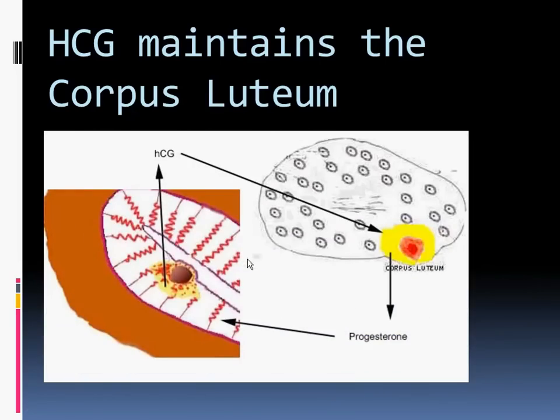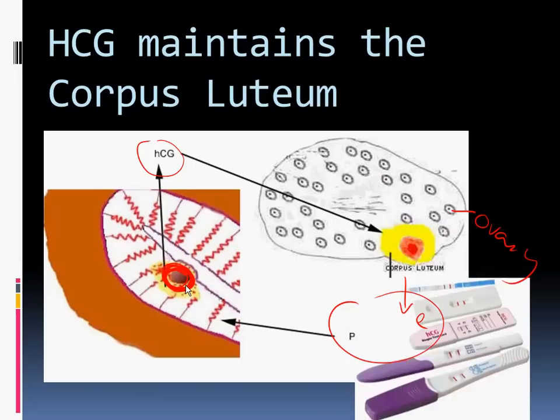So HCG is going to be what is released as soon as implantation occurs successfully. So if this was the blastula, the ball of cells that migrated and now implanted, HCG is going to act upon the corpus luteum, the structure within the ovary, and this will cause the release of estrogen and progesterone to continue, which would maintain the cycle as is. So no shedding of the uterine lining, no release of FSH and LH.